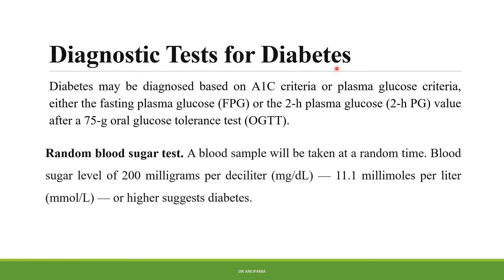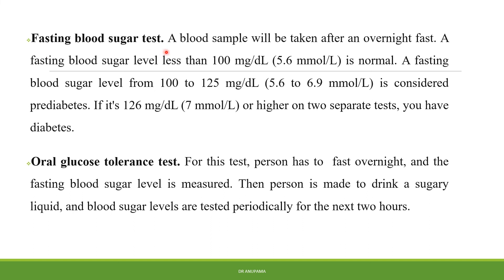Diagnostic tests for diabetes: diabetes may be diagnosed based on the A1c criteria or plasma glucose criteria, either the fasting plasma glucose or the 2-hour plasma glucose value after a 75-gram oral glucose tolerance test. In a random blood sugar test, a blood sample is taken at a random time; a level of 200 milligrams per deciliter or 11.1 millimoles per liter or higher suggests diabetes. In a fasting blood sugar test, a sample is taken after an overnight fast. Less than 100 milligrams per deciliter is normal, 100 to 125 milligrams per deciliter is pre-diabetes, and above 126 milligrams per deciliter indicates diabetes.